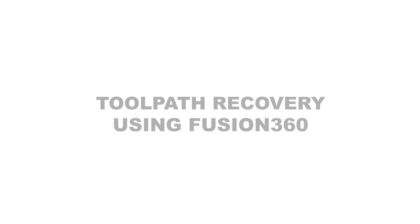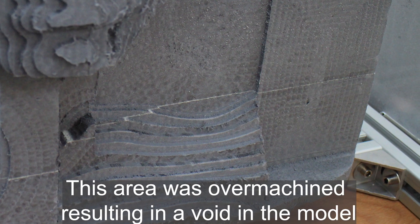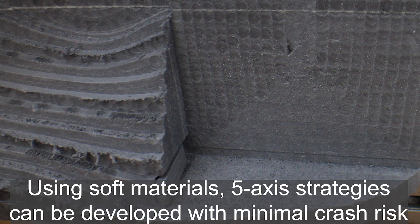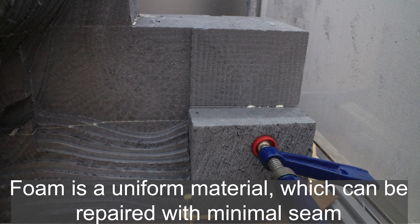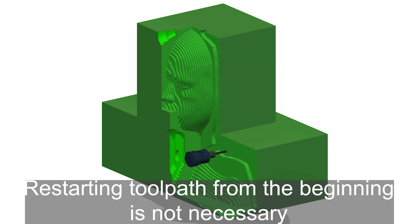Now let's talk about tool path recovery using Fusion 360. This area was over-machined, resulting in a void in the model. Using soft materials, five-axis strategies can be developed with minimal crash risk, and foam is a uniform material which can be repaired with minimal effort.